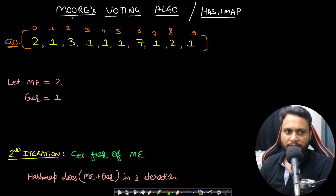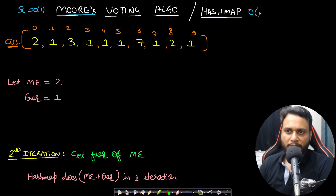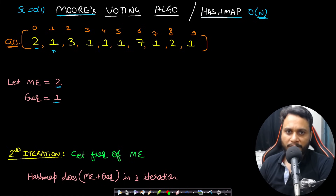There are two techniques to find the majority element: Moore's Voting Algorithm with O(1) space, and using a hash map with O(n) space. Let's use Moore's Voting Algorithm. The first item is assumed to be the majority element with frequency one, and we iterate from the second item. More detail is in the linked video.